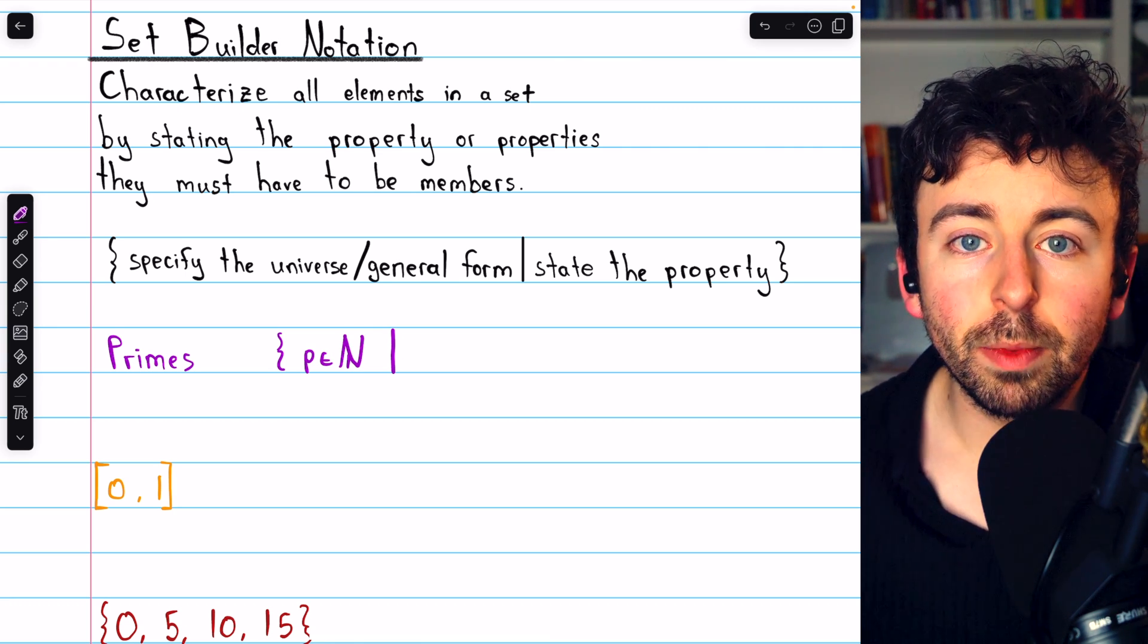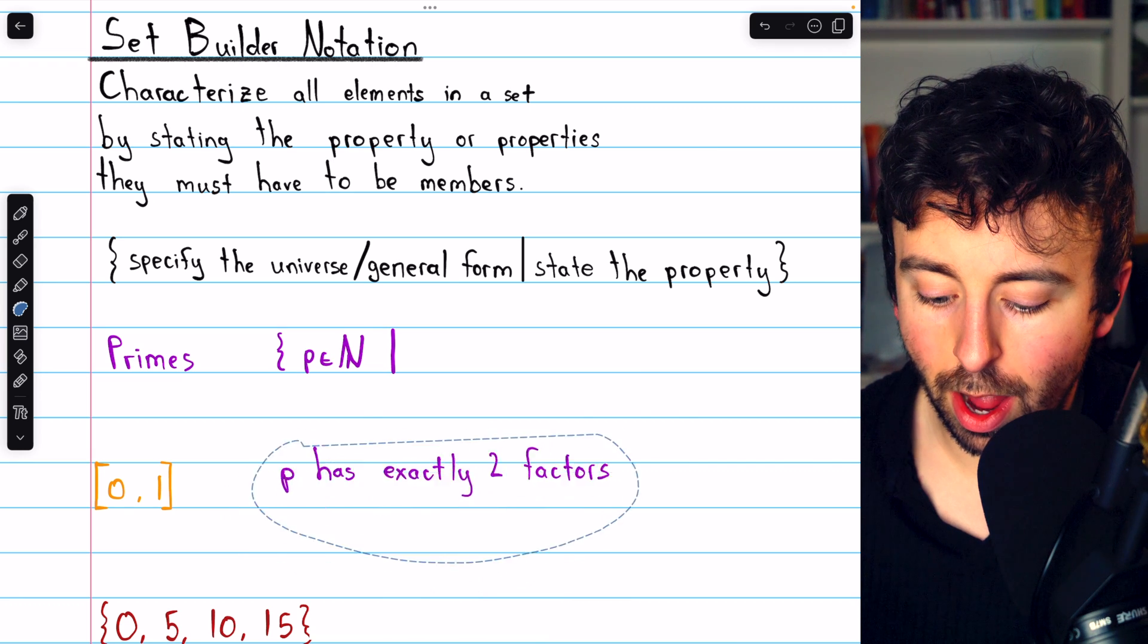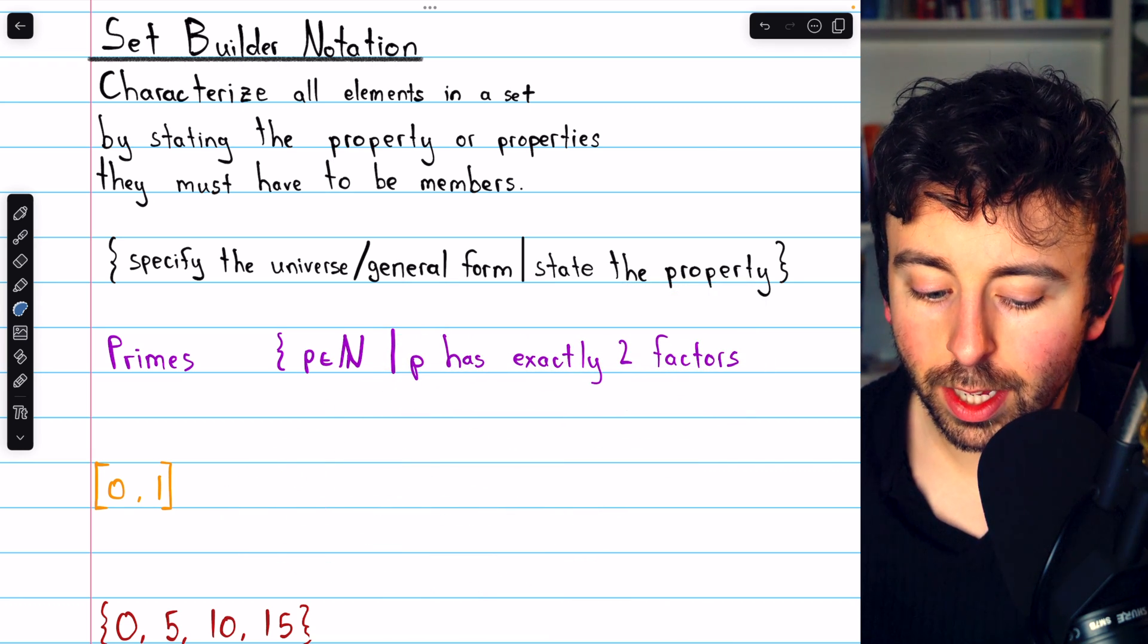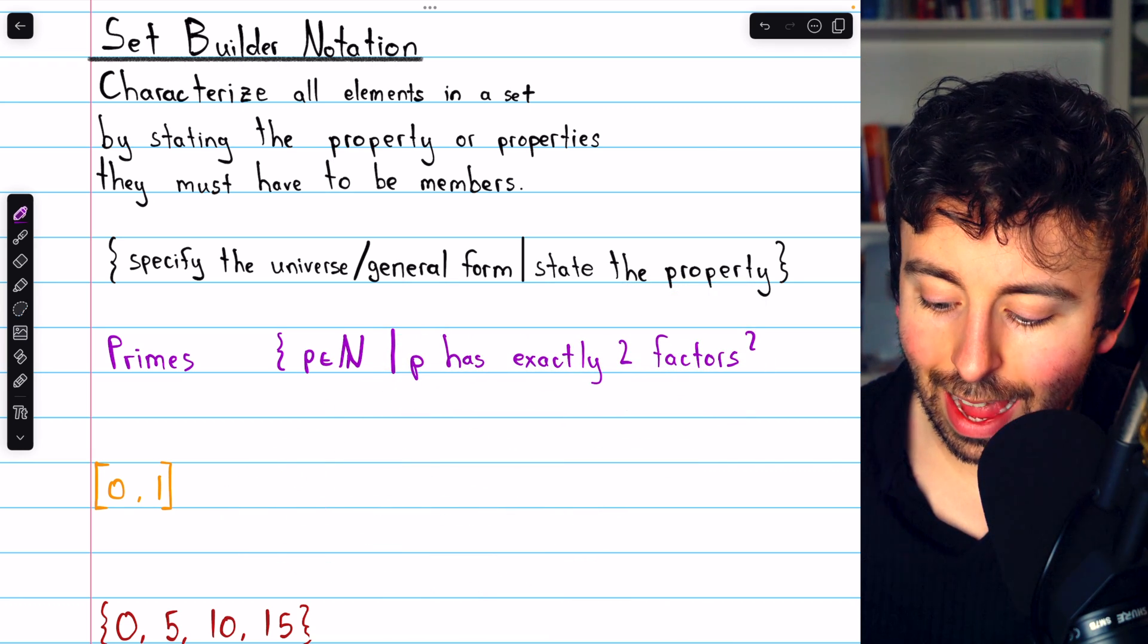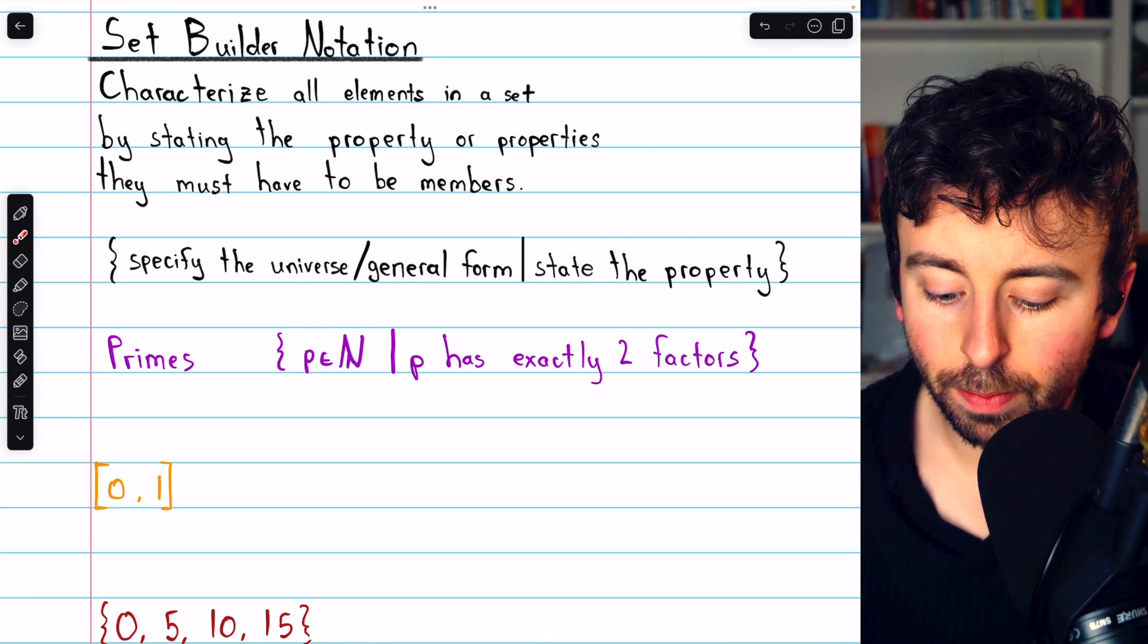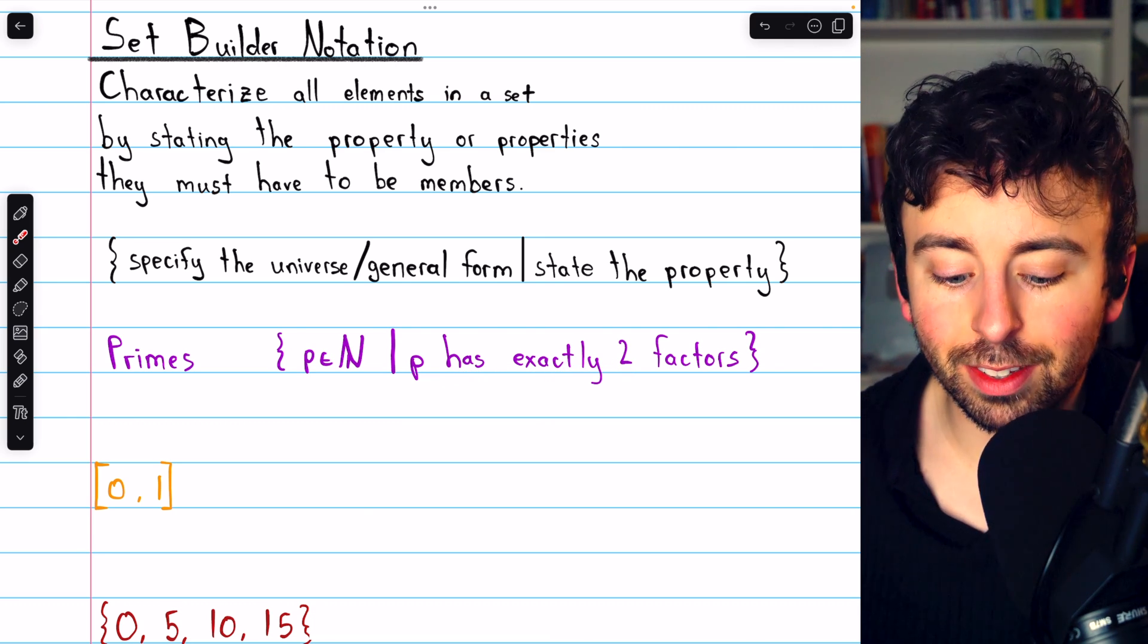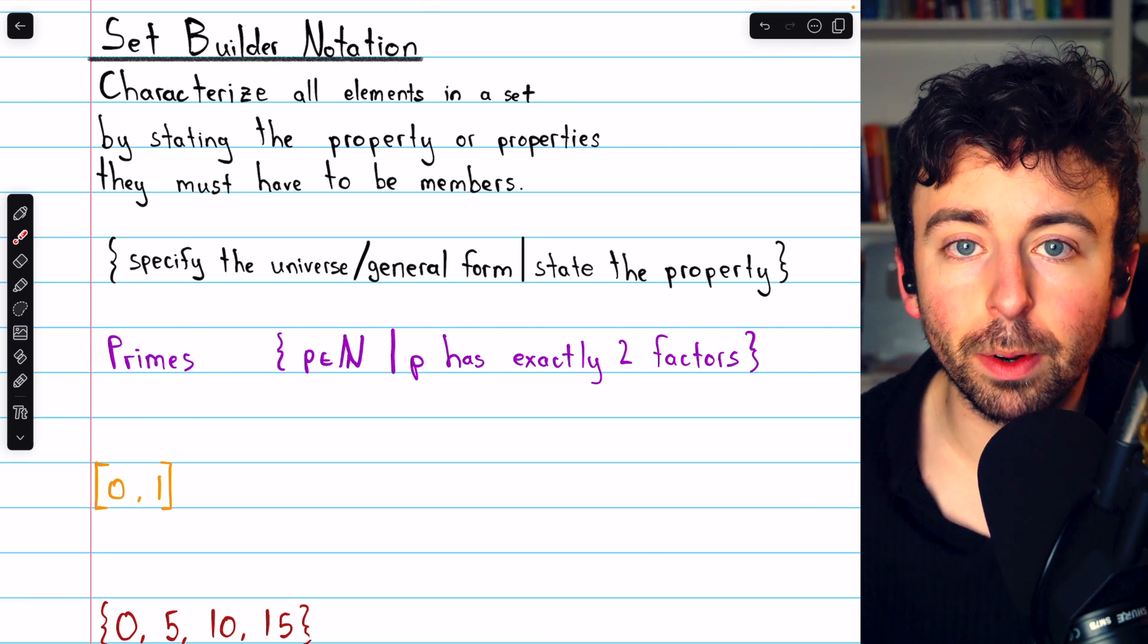And to the right of this vertical line, I have to state the additional property that a number must have to belong to the set of primes. That additional property is that p has to have exactly two factors. So this is the set of all natural numbers p where p has exactly two factors. That is precisely the set of prime numbers.